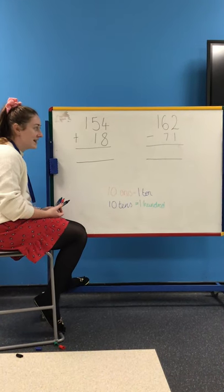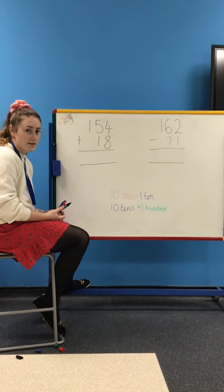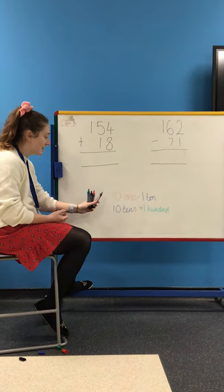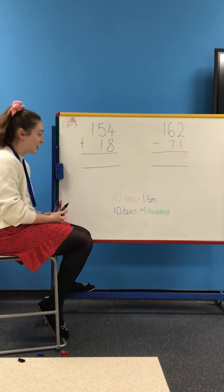The final method that children might use when adding and subtracting is the column method. So it's important that they understand what I've written at the bottom here in order to be able to do this accurately.